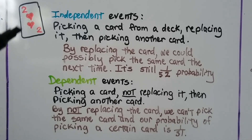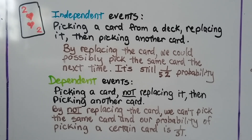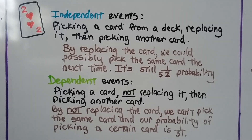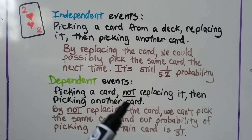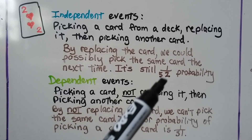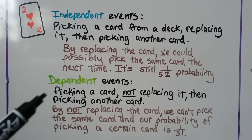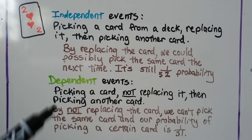For independent events, if we pick a card from a deck and replace it before picking another, it's independent because we could possibly pick that same card again — our probability of picking that card is 1 out of 52. Dependent events would be picking a card and not replacing it. Now we don't have 52 cards anymore, we have 51. By not replacing the card we can't pick that same card again, and our probability of picking a certain card is now 1 out of 51, so the outcome is dependent upon what happened the first time.